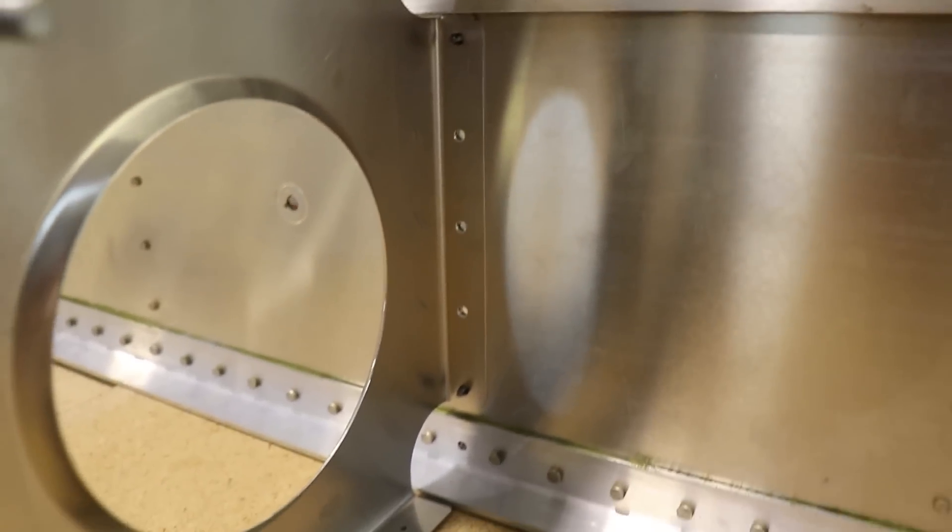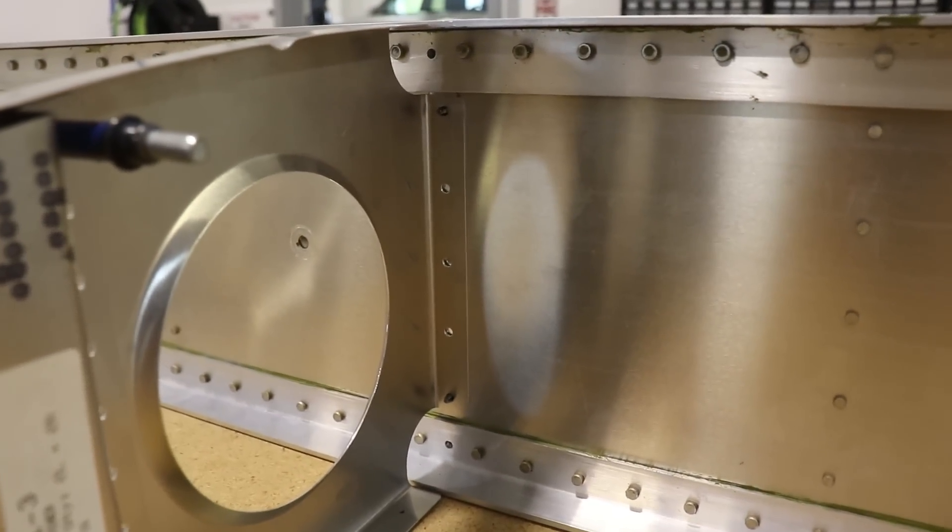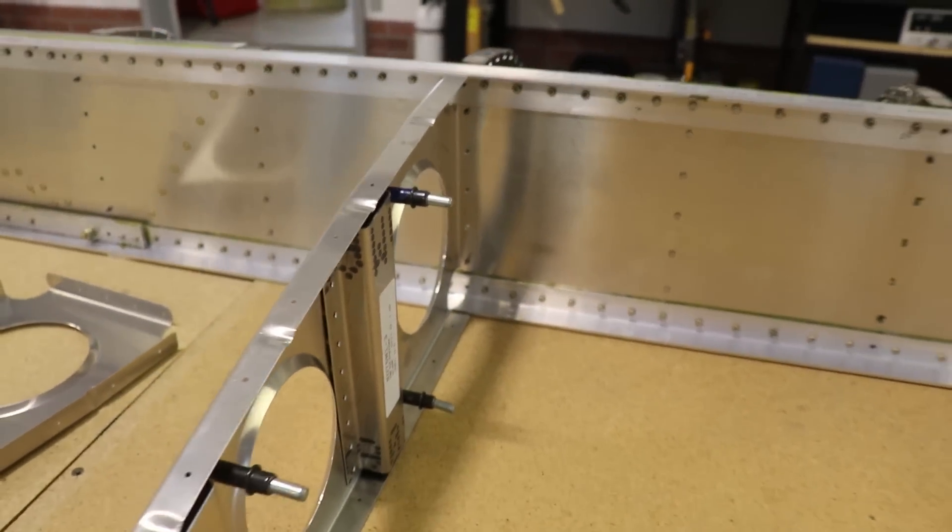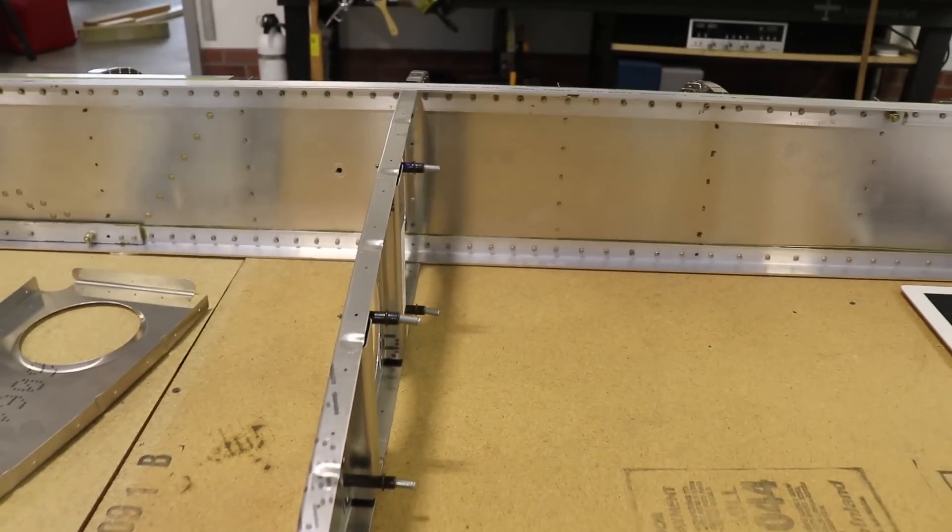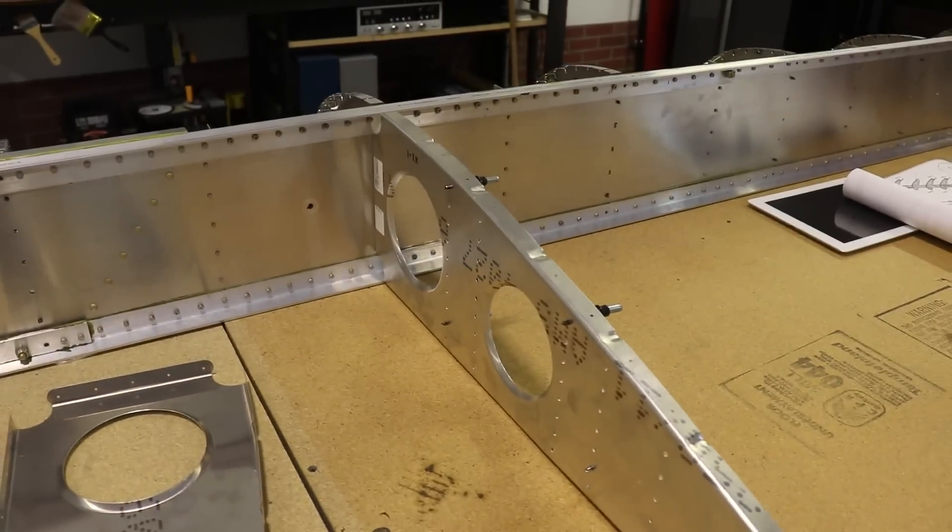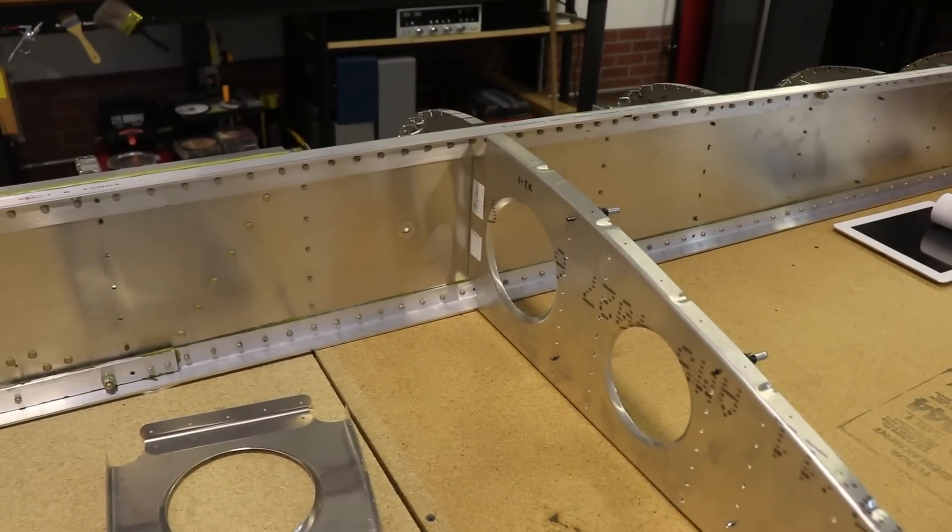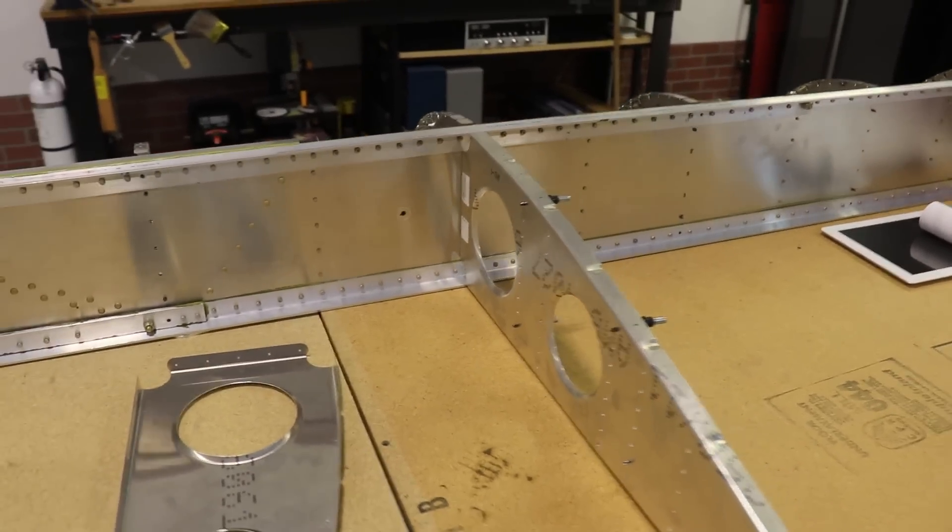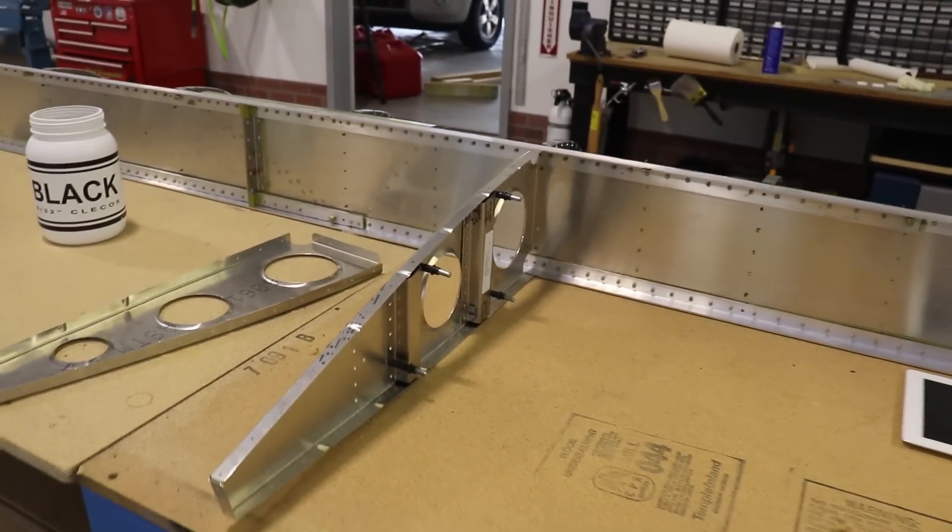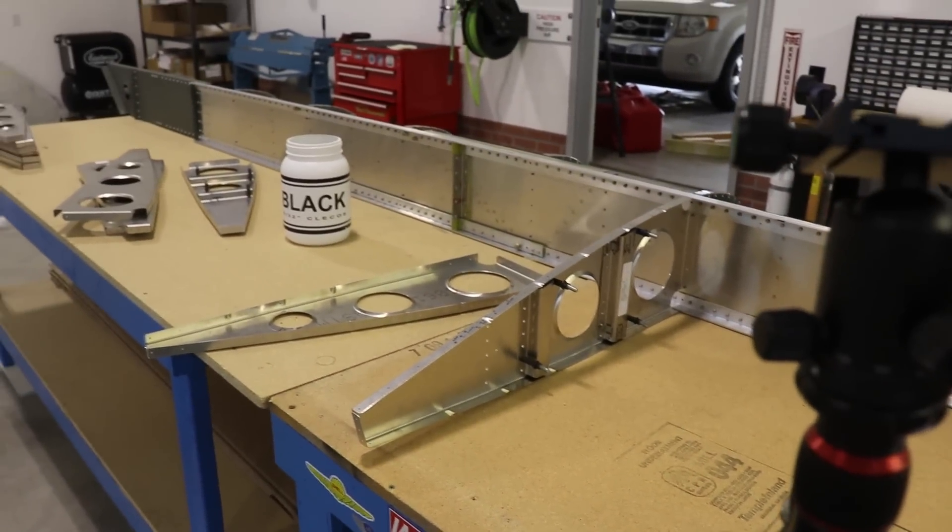So now you can see it's clecoed on there and how nicely it fits and I didn't have to modify anything. So I guess my advice to you is when you find parts that don't fit together or something doesn't seem right, just go ahead and stop, take a look at it, think about it for a while before you do anything else. In this case, it fit perfectly and I didn't have to modify anything. So onward we go.